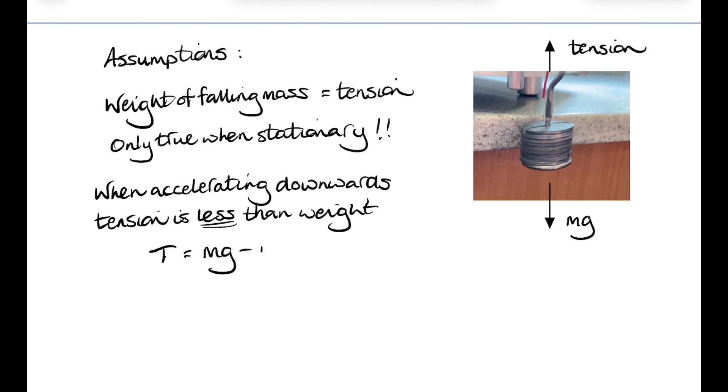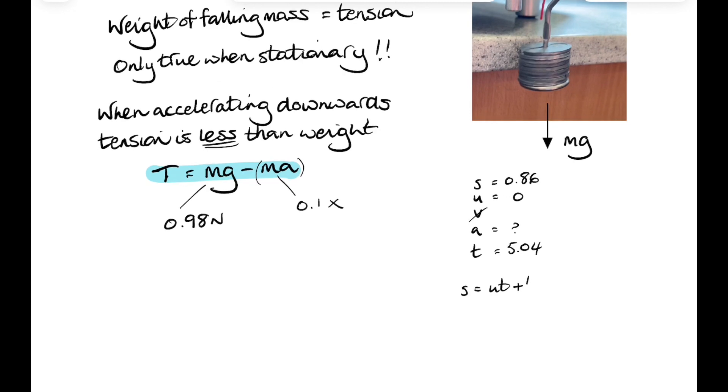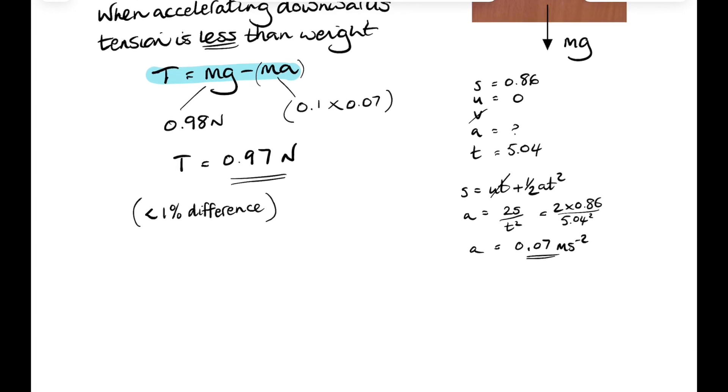And in fact, the tension will be equal to the weight minus the unbalanced force that's making the mass accelerate. Now we know what the weight is. The weight was 0.98 newtons. The falling mass had a mass of 0.1 kilograms. And we can work out the linear acceleration of the falling mass by using our linear equations of motion. So if we do a very quick s equals ut plus a half a t squared and work out the acceleration of the falling mass, then that works out to be 0.07 meters per second squared. And if we sub that in, then it turns out the actual tension is 0.97 newtons, which is a difference of less than 1%. And we might be able to treat that as negligible.